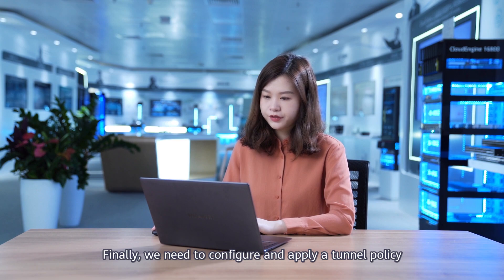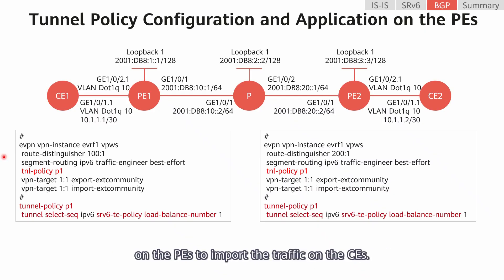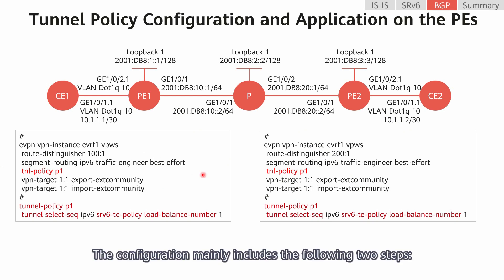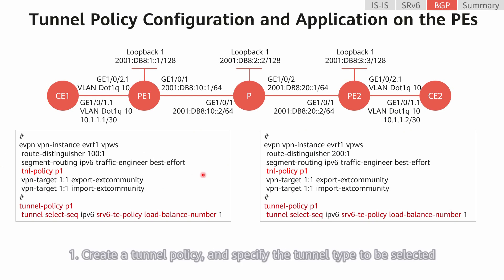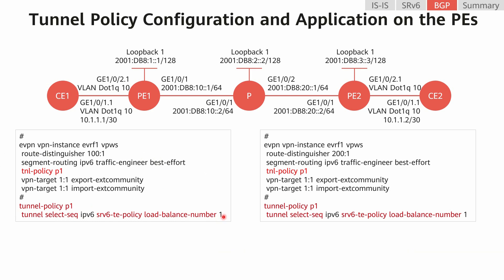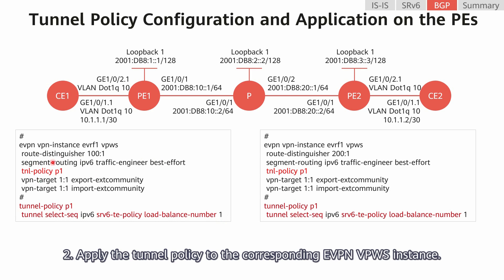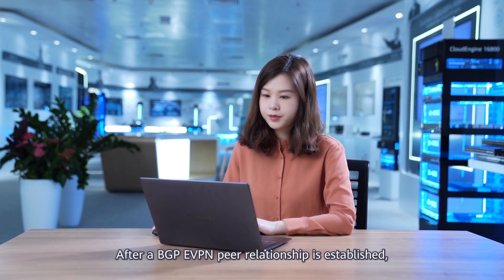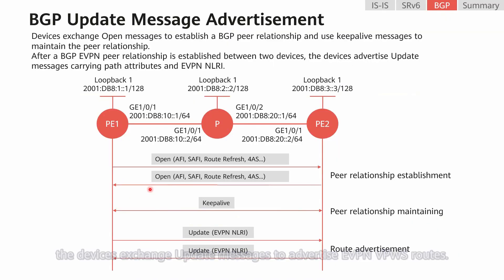Finally, we need to configure and apply a tunnel policy on the PEs to import the traffic on the CEs. The configuration mainly includes the following two steps. First, create a tunnel policy and specify the tunnel type to be selected and the number of tunnels that can participate in load balancing. Second, apply the tunnel policy to the corresponding EVPN VPWS instance. After a BGP-EVPN peer relationship is established, the devices exchange update messages to advertise EVPN VPWS routes.